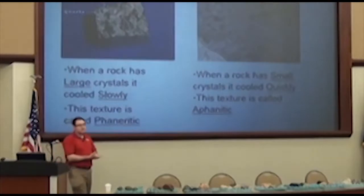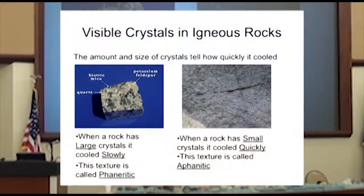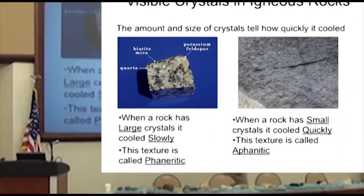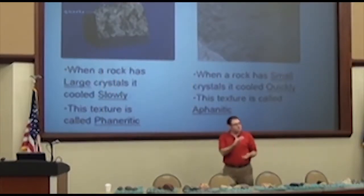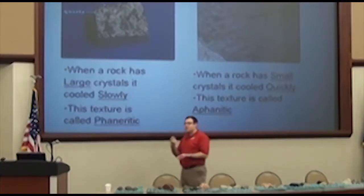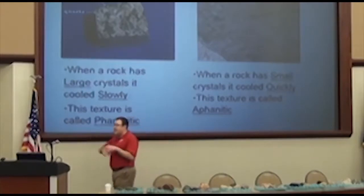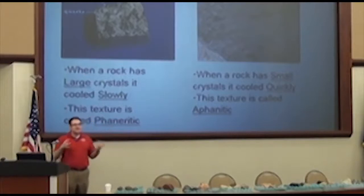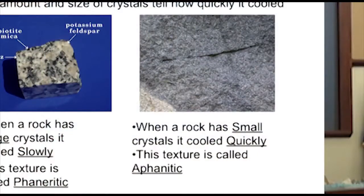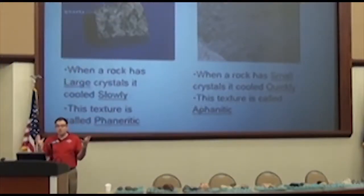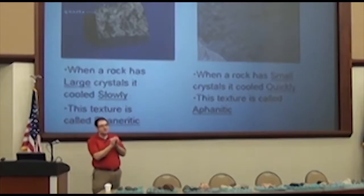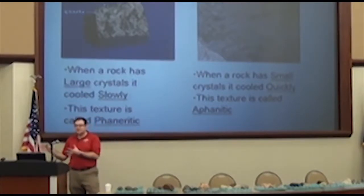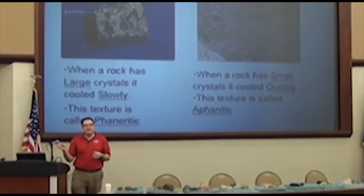The biggest feature that tells the difference is the size of the crystals. When something cools inside the earth, it takes a long time — enough time for the crystals to grow bigger. In most intrusive rocks, you can see the crystals just from looking at it — you don't need a magnifying glass or a microscope. When they cool outside of the earth, it cools so fast it doesn't give the crystals a chance to grow very big at all — you need a microscope to really see them. When you can see the crystals, we call that phaneritic. When you can't see the crystals, we call that aphanitic.